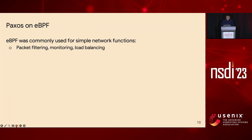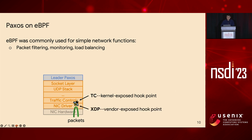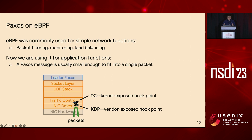Here is a bit more background on eBPF. It is commonly used for simple networking functions such as packet filtering, monitoring, and load balancing. In the existing kernel networking stack, an eBPF program can be attached to two hook points to quickly process and forward packets. One is called TC, which is a kernel-exposed hook point. Another is XDP, which is a NIC vendor-exposed hook point that only processes ingress packets but more efficiently than TC. In Electrode, we use eBPF along with TC and XDP for application functions. A common Paxos message is usually small enough to fit a single packet, so we can leverage eBPF to customize Paxos message processing, just like customizing normal packet processing.